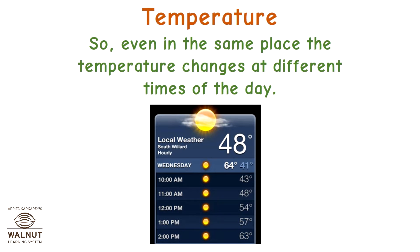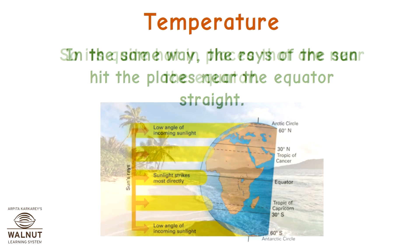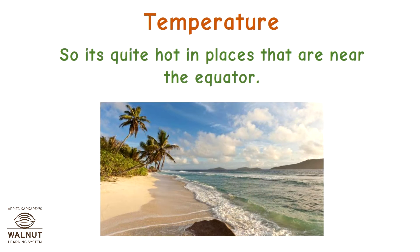So, even in the same place, the temperature changes at different times of the day. In the same way, the rays of the sun hit the places near the equator straight. So, it's quite hot in places that are near the equator.